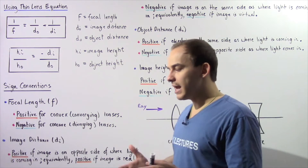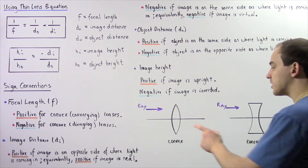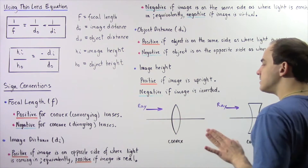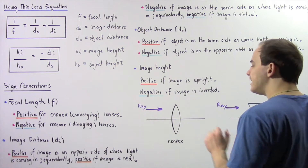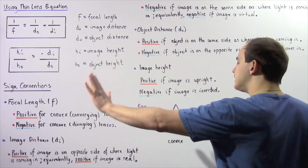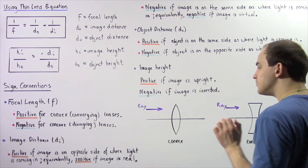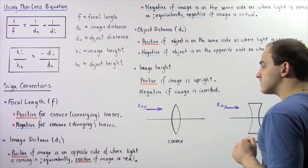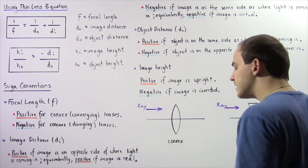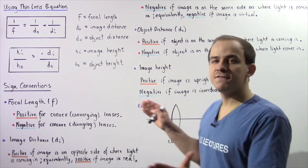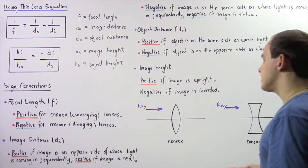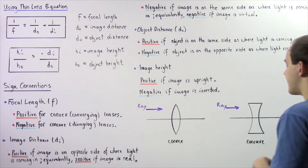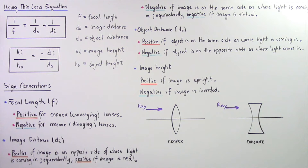A convex lens is always thicker at the center and thinner at the edges. When rays of light come in from the left side of the lens, the convex lens will converge those rays of light. So a convex lens is also known as a converging lens.